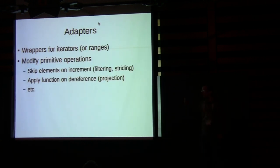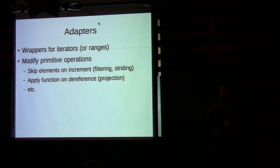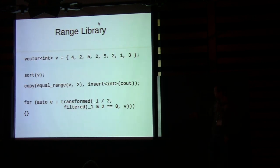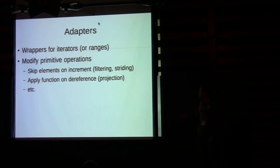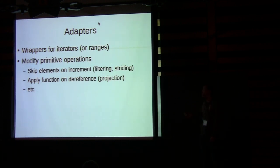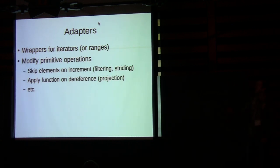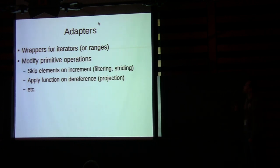Adapters are wrappers for iterators or ranges. What they do is modify the primitive operations. A filter adapter, when incremented, checks whether the new element matches the predicate — if not, it skips over it. So we modify the increment operation. The transform adapter modifies the dereference operation of an iterator, or whatever the equivalent is for a range.